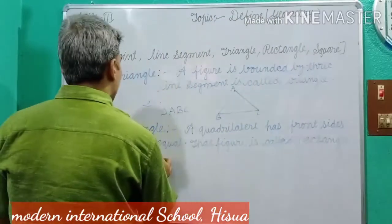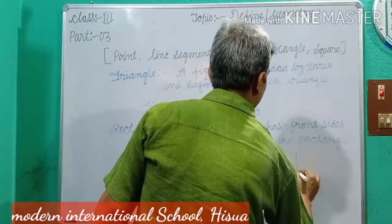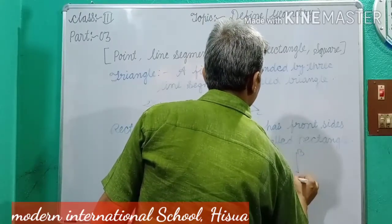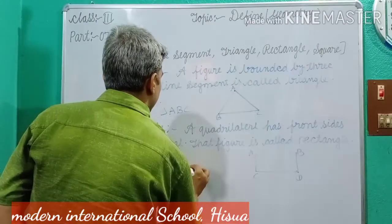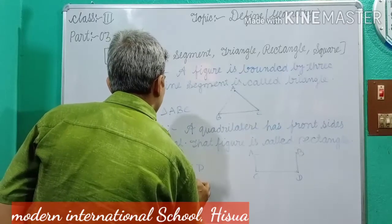For example, here A, B, C, D. Dear students, A, B, C, D. ABCD is a rectangle.